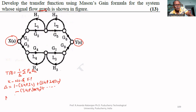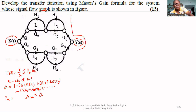What is pk? pk is the gain product of the kth forward path. What is Δk? Δk is the delta for the part of the graph which is not touching the kth forward path. We have to solve this problem using Mason's gain formula.